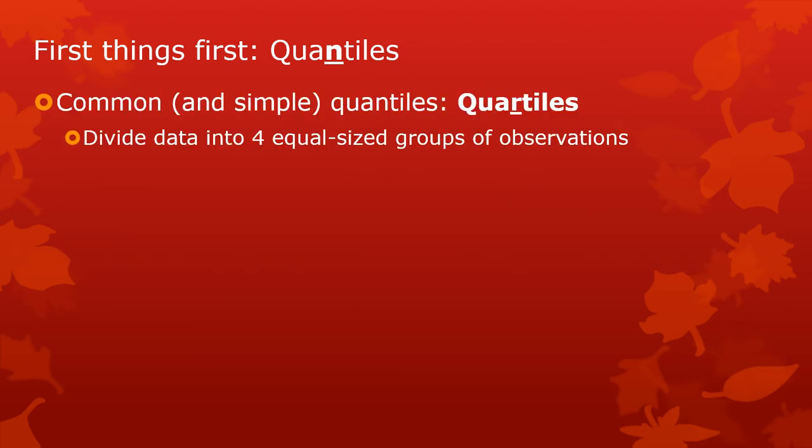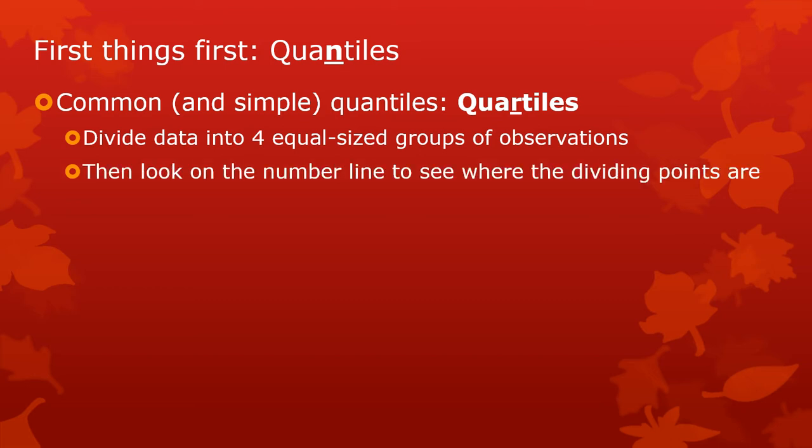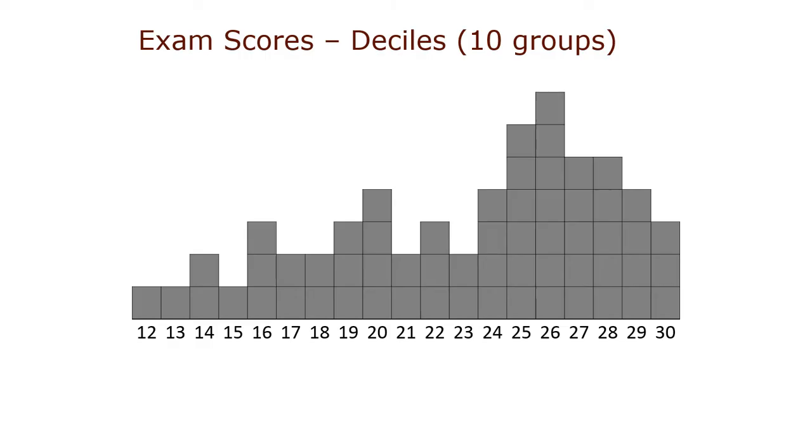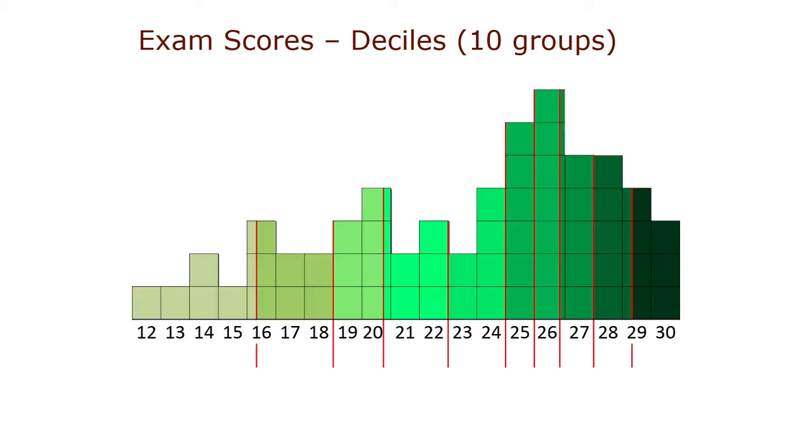The common and simple quantiles that we use all the time are the quartiles. I know those two words are so similar, but quartiles. Quantiles is general. Any division of your data set up into numbers of observations. Quartiles is division into four groups. Here's a histogram where I've drawn in the block so you can see individual observations.